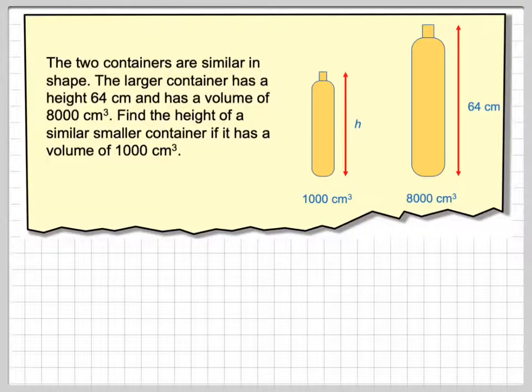Two containers are similar in shape. The larger container has a height of 64 centimeters and has a volume of 8,000 centimeters cubed. Find the height of a similar smaller container if it has a volume of 1,000 centimeters cubed.